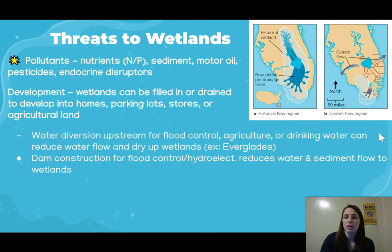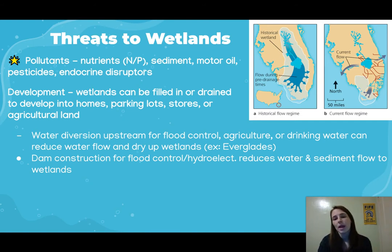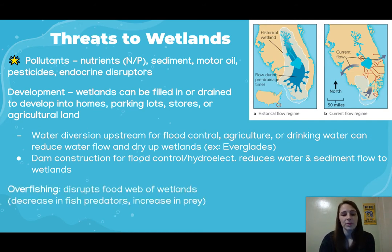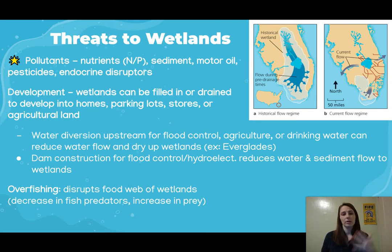Dam construction is also a major form of flood control and hydroelectric electricity production, which reduces water and sediment flow to wetlands. Remember that sediment flow brings nutrients to wetlands. Overfishing is another threat — it disrupts the food web of wetlands by decreasing fish predators, increasing prey populations, and destabilizing the entire ecosystem.